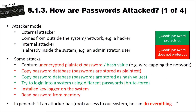Now let's look at how passwords are attacked. Before discussing specific attacks we need an attacker model. There are two types: an external attacker coming from outside the system, such as a hacker, and an internal attacker who is already inside the system, such as an administrator or another user. In the following attacks, green means a good password can protect us against that attack, while red means even a good password cannot protect us.